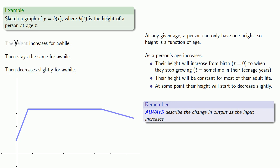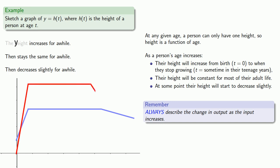It's important not to get too hung up on the details — this is supposed to be a sketch of the graph. Within limits, any graph that shows an increase for a while, then a constant section, then a slight decrease will also be a potential sketch. We could have other growth patterns, and in the absence of additional details, we can't get much more precise.